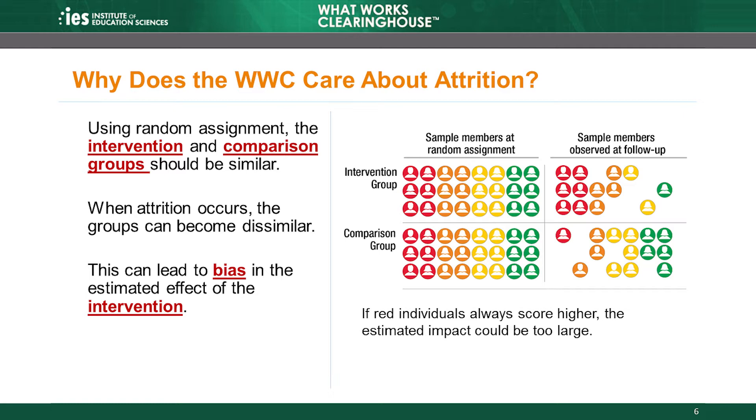Attrition can result in a systematic bias if something other than the intervention is causing the difference between the groups in the study.